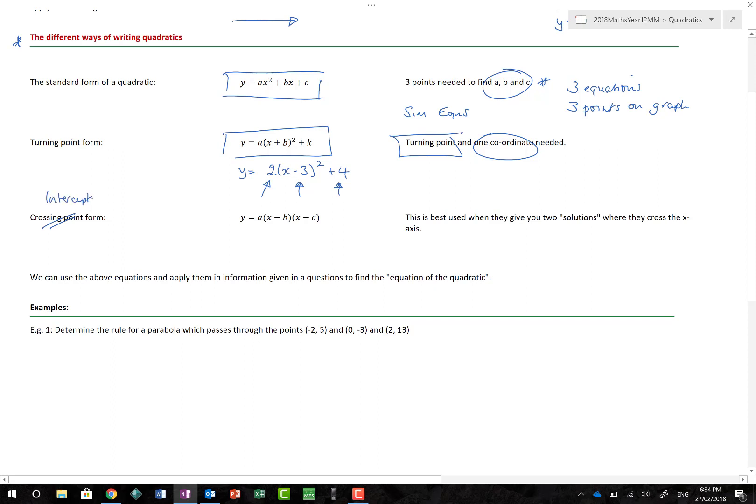And then there's crossing point form, or more importantly, the intercept form, which allows us to write things in this manner. Now please, always remember, as we've got here for both the turning point form and the intercept form, this value of a, because there might be a dilation. Never assume that the dilation is 1. Always put that value of a in. And when they give you these two solutions, or the two roots of the equation, you can put them in there, along with maybe another coordinate, and find out the values of a, b, and c.